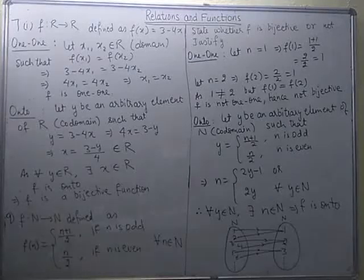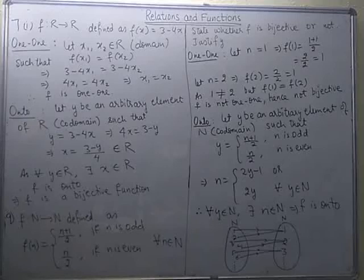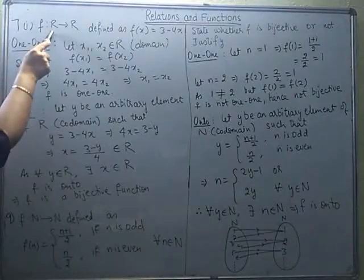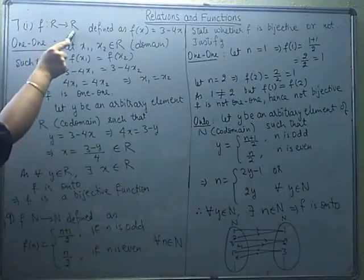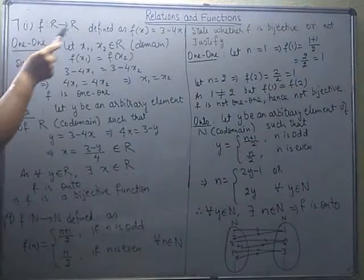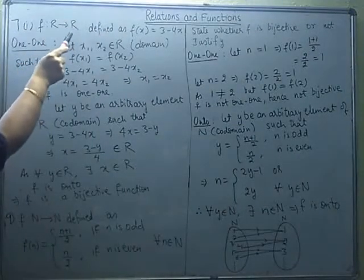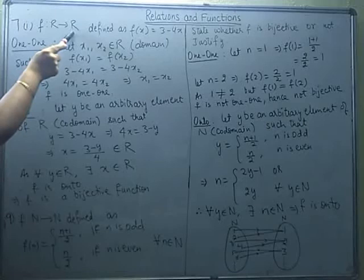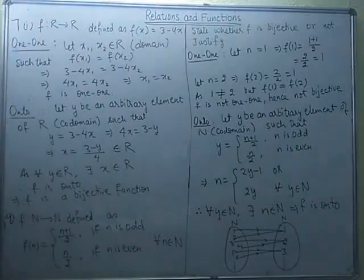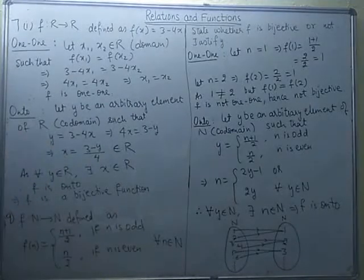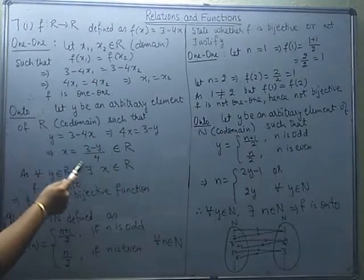The nature of y is known to us, and for that y, we have to check whether x is an element of the domain or not. If yes, then the function is onto; otherwise it is not onto. The domain is R and the co-domain is also R. So if y belongs to the co-domain, we need to show it is the image of some element in the domain, which is also the set of real numbers. We need to check the nature of x.